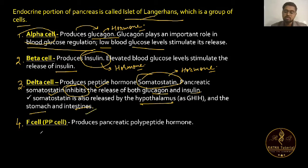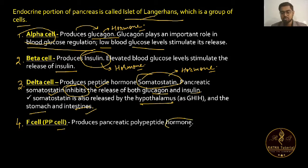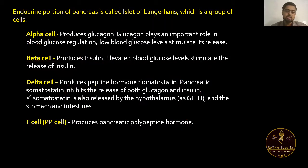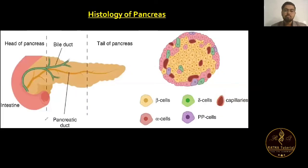The fourth type of cell is the F cell or PP cell, and it produces pancreatic polypeptide hormones. This completes the endocrine portion of the pancreas.